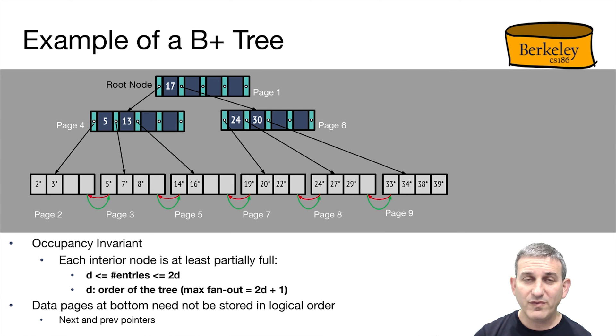The data pages at the bottom of a B-plus tree, distinguished from ISAM, need not be stored on disk in the order they're in at the leaf of the tree. So for example, you can see in this B-plus tree that page 3 is a neighbor of page 5 at the leaves, and of course they're separated by page 4 on disk. But the previous and next pointers, here shown in green and red, allow us to traverse the leaf level of the B-plus tree rightwards or leftwards as needed.